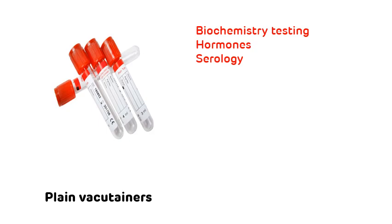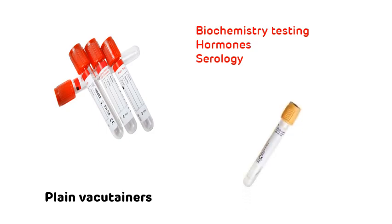On centrifugation of the plain vacutainer, what you obtain is serum. Serum is basically defibrinated plasma which does not contain any clotting factors or fibrinogen. In contrast, with the EDTA vacutainer, on centrifugation you get plasma. Nowadays, yellow color gel tubes are also used for all biochemistry and hormonal tests.